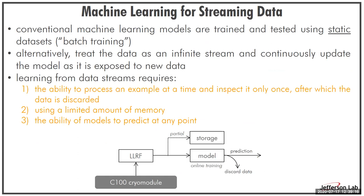Machine learning for streaming data differs from conventional batch approaches — here we treat data as an infinite stream and need to continuously update the model. This is important for accelerator applications because storing all data indefinitely is cost-prohibitive: 136 signals per fault event sampled at kilohertz rates during operations lasting six weeks at a time, multiple times per year, makes storage alone prohibitive. The idea is a model that can look at the data, learn from it, make a prediction, and then discard the data — critical because accelerators have a huge number of streaming signals.